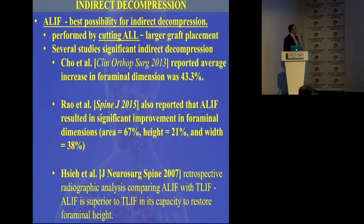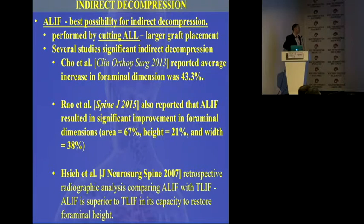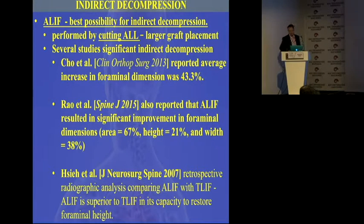The last approach I'm going to discuss is ALIF. The ALIF approach is believed to give you the best opportunity for indirect decompression, because you cut the ALL (anterior longitudinal ligament), which allows you to place a bigger graft and a larger cage. Many authors report quite large numbers for indirect decompression achieved with ALIF, and comparison studies confirm that ALIF is superior to TLIF, for example, in its capacity to restore foraminal height.